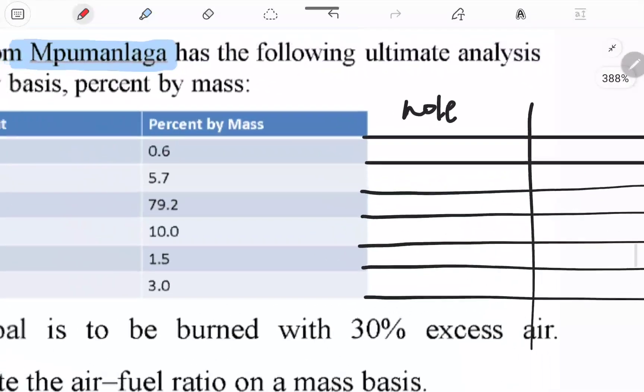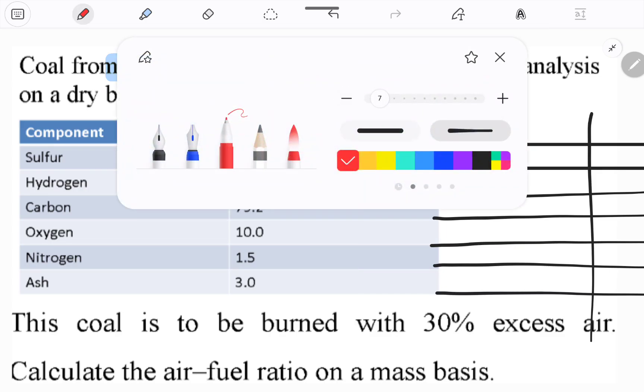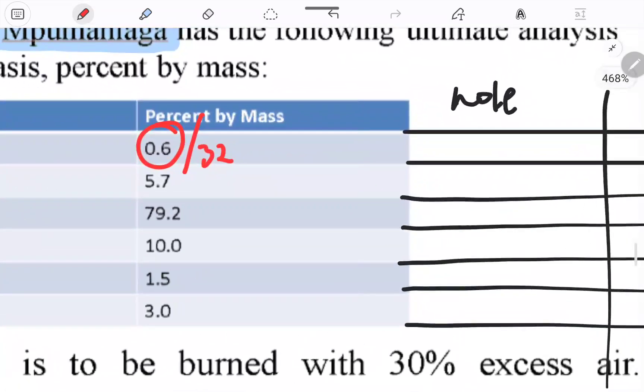I'm going to zoom in again. I'm just going to take this divided by the molar mass for each component. If I take 0.6 divided by the molar mass of sulfur, which is 32, I'm getting 0.01875.